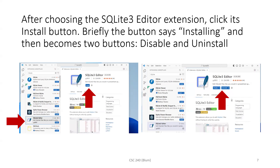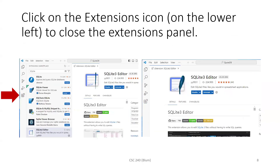Briefly, the Install button will say 'Installing.' I didn't grab a screen capture fast enough to show that. When it's done, it becomes two buttons so you can either uninstall or temporarily disable the extension. Now I want to get rid of the Extensions panel on the left. The Extensions icon on the extreme left acts as a toggle — clicking it shows or hides the panel.